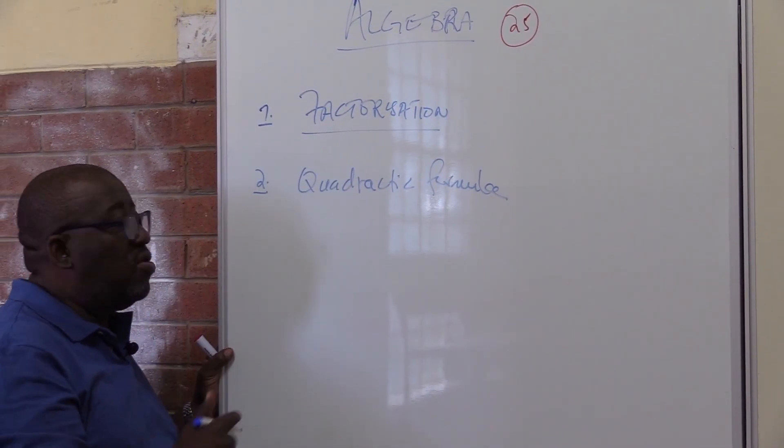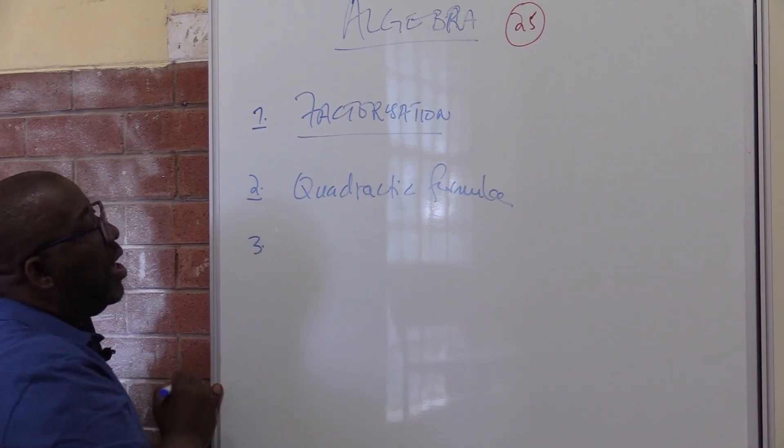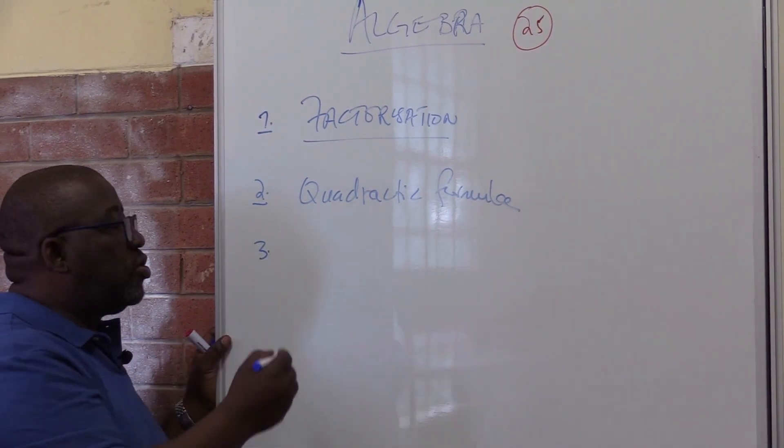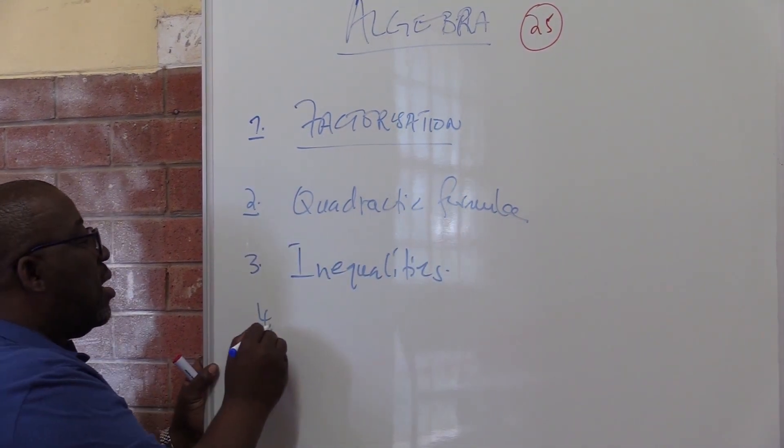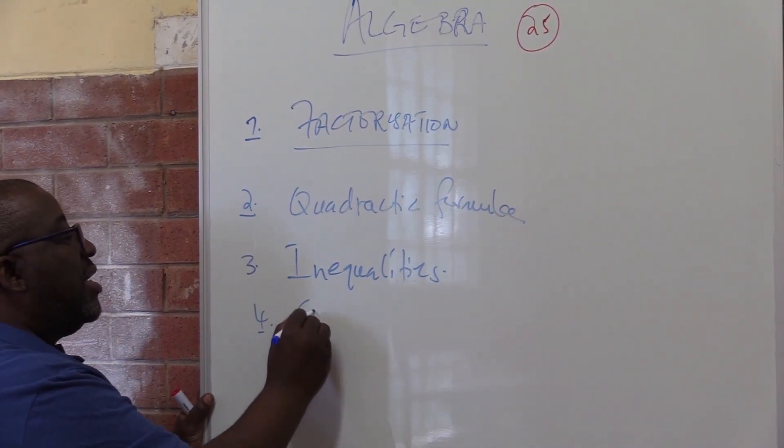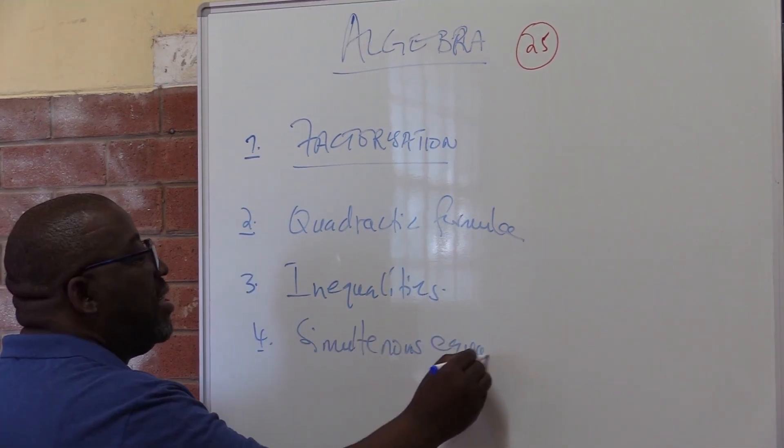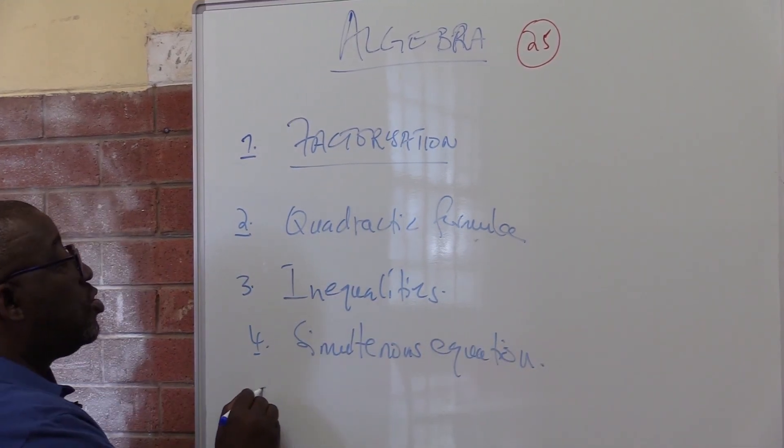Remember this topic algebra is always question one in your examinations. Number three, after quadratic formula you've got to be able to do the inequalities. After inequalities, you've got to do your simultaneous equations.